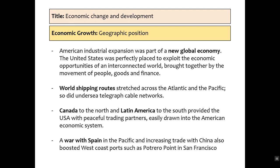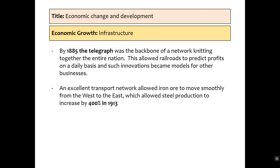A war with Spain further drives economic growth. In terms of infrastructure, by 1885 the telegraph is the backbone of a network, meaning the United States is connected and can share profits. Railroad growth meant goods could be sent easily, with new innovations developing alongside. An excellent transport network increases steel production by 400% in 1913.